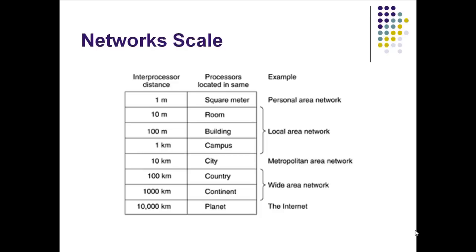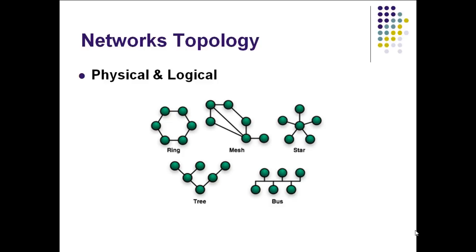Now, in addition to scale, we can also classify networks by their topology. The name topology is just a way to describe how these different network components are interconnected. It could be how they are interconnected physically and how they work or how they connect logically. So there are two kinds of topologies. And by the way, those two kinds can be mixed together. But let's talk first about the physical.